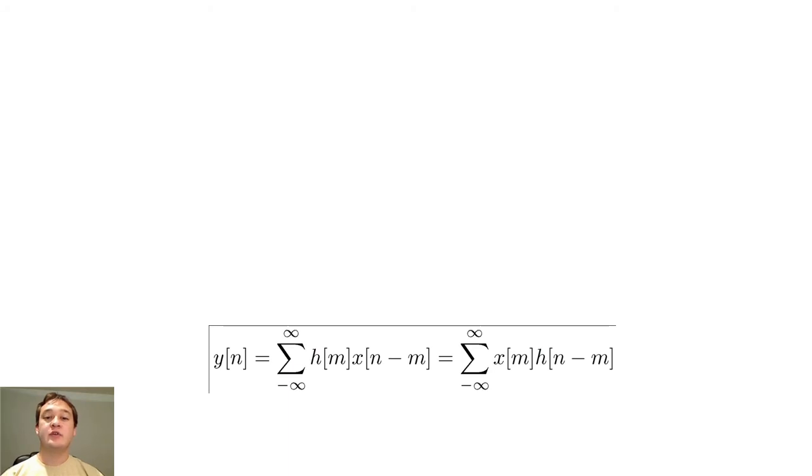Now that we have discussed the unit pulse response, let's return to the convolution formula and answer the question, why must we flip and shift the input?